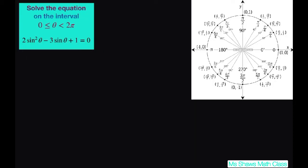This equation is a quadratic in sin θ and we can factor it. The way you can think about this is if you let x = sin θ, then you'd have 2x² - 3x + 1 = 0, and this can be factored as (2x - 1)(x - 1) = 0.